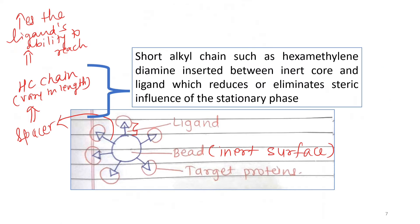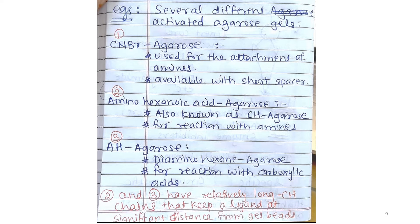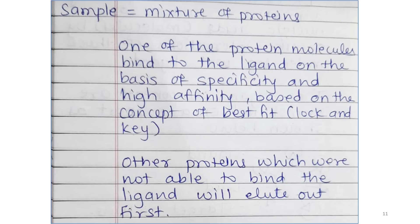This is the basic principle of affinity chromatography. The notes attached in this video will give you enough idea to understand what the different inert particles used as stationary phase are, and which ligands can be attached on these inert particles. The attachment between the stationary phase (inert particle) and the ligand is a hydrocarbon chain attachment, and its length can be varied.